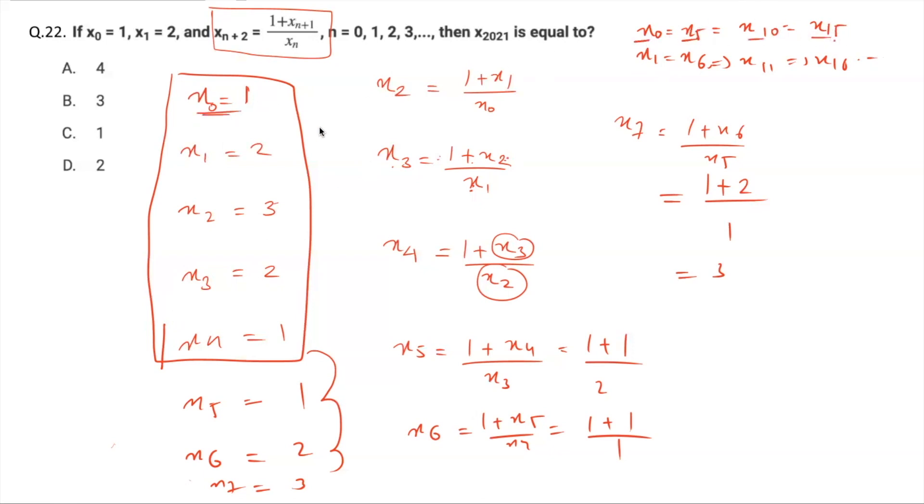So basically x₂₀₂₀ will be same as x₀, which is 1. So x₂₀₂₁ will simply be equal to x₁, which is 2. The answer to your question thereby is very simply equal to 2.